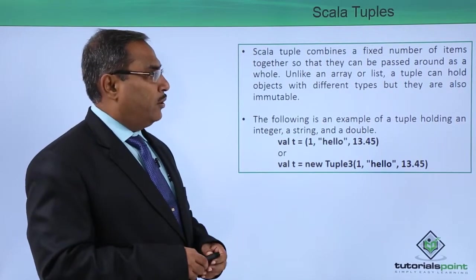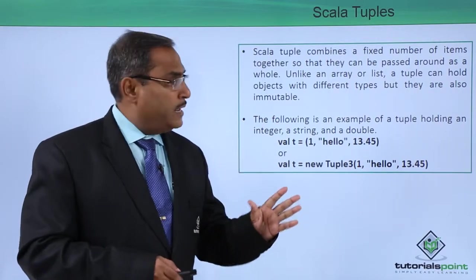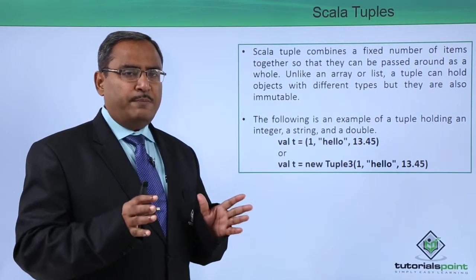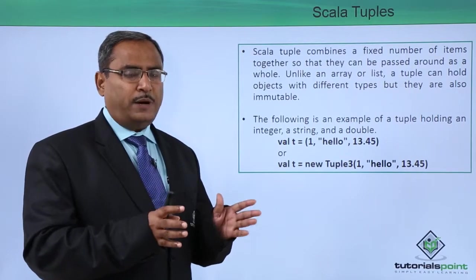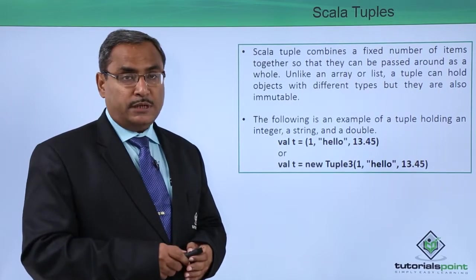Unlike an array or list, a tuple can hold objects with different data types, but they are also immutable. For a fixed number of data we need to pass, they might have different data types, and Scala tuples are immutable.